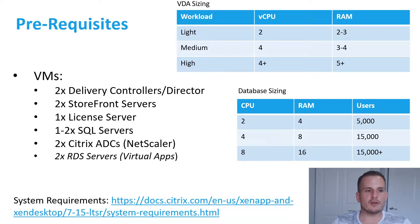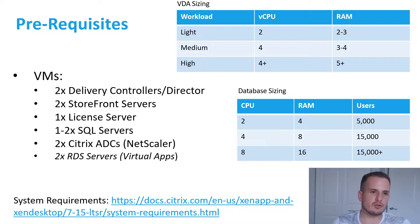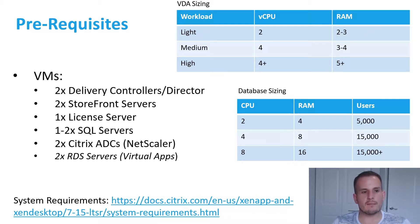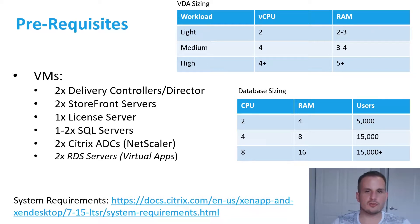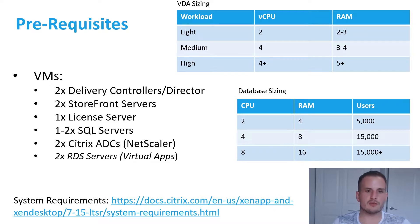As a general rule of thumb, taken straight from Citrix's VDI Handbook: for VDA sizing, a light workload user should get 2 vCPU and 2-3 GB of RAM; medium workload, 3-4 GB RAM; and heavy workload, 4+ vCPU with 5+ GB of RAM. For database sizing, if you're under 5,000 users, 2 CPU and 4 GB of RAM should be sufficient from a Citrix perspective. I'll link Citrix's system requirements in the description.